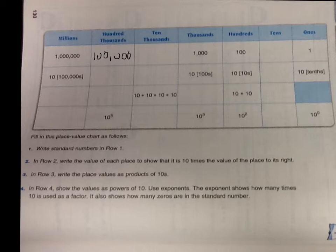So if we compare, we have 1,000,000, 100,000, we have 10,000, 1,000, 100, 10s, and 1s.